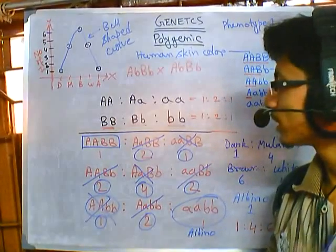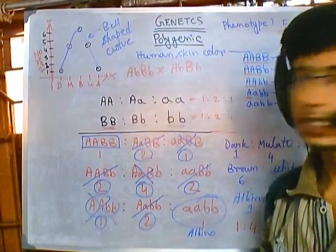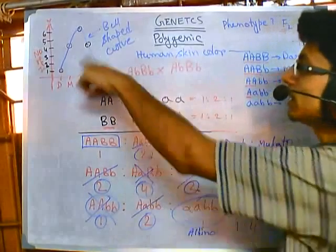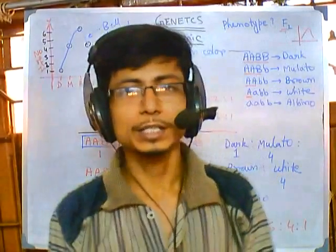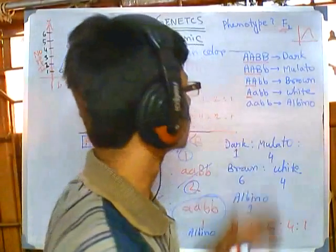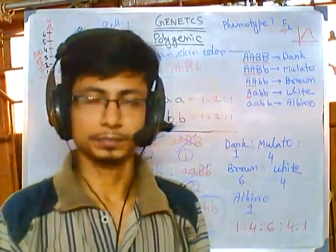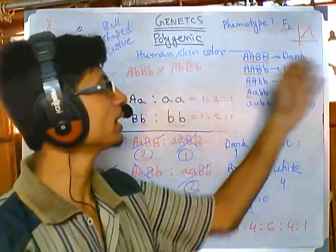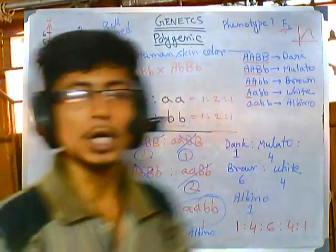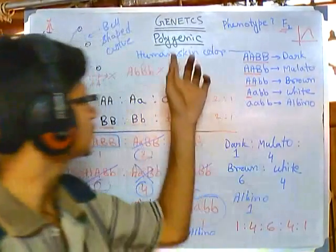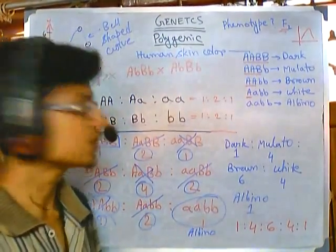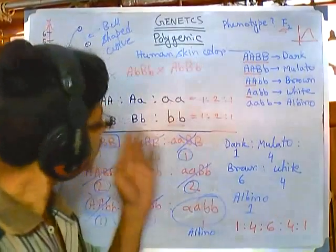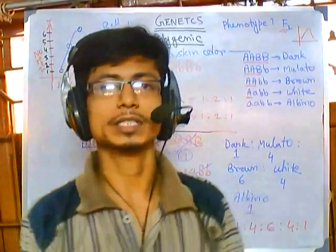You can see with just one problem I can explain polygenic inheritance in a clear manner. The key is to forget about separate traits and focus on the number of dominant alleles present: four dominants = dark, three = mulatto, two = brown, one = white, none = albino. This is the way of handling multigene or polygenic problems. The next video will cover multiple alleles — blood group problems. I hope this helps you understand polygenic inheritance. Thank you.